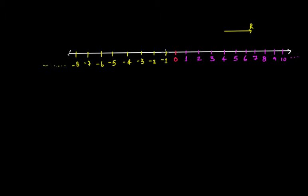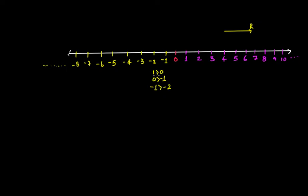You have now placed negative numbers, zero, and positive numbers. This is the representation of integers on the number line because we have negative numbers, zero, and positive numbers. An important point to note is that minus one is greater than minus two - minus one is greater than minus two, and zero is greater than minus one.